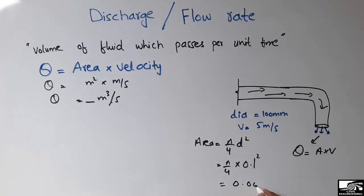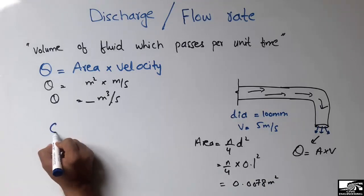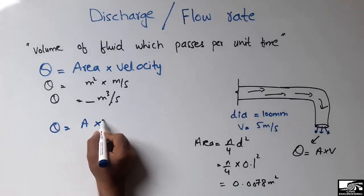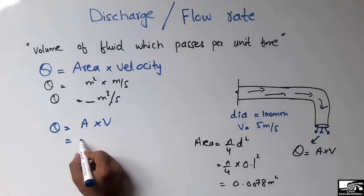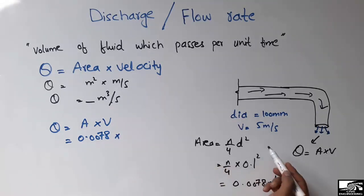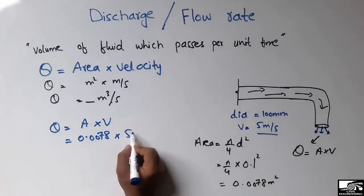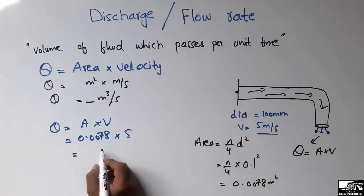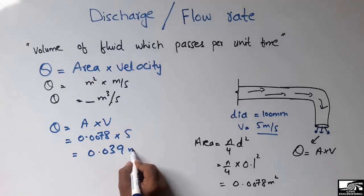So multiplying it with the velocity, discharge equals the area into velocity. The area is 0.0078 and the velocity is 5 meter per second. So by multiplying these two quantities we get 0.039 meter cube per second.